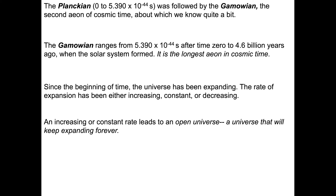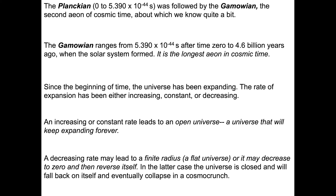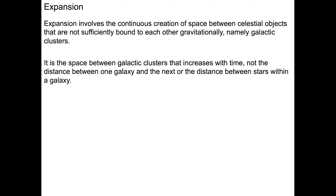An increasing or constant rate of expansion leads to an open universe — one that will keep expanding forever. A decreasing rate may lead to a finite radius, also called a flat universe, or it may decrease to zero and then reverse itself. In this case, the universe is closed and will eventually collapse back into another singularity. Expansion involves the continuous creation of space between galactic clusters not sufficiently bound to each other gravitationally. The space between galactic clusters is increasing with time — not the distance between one galaxy and the next or the distance between stars within a galaxy.